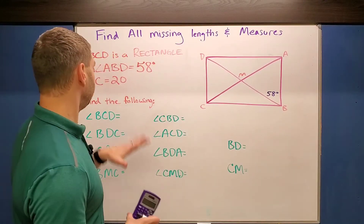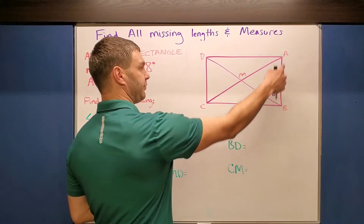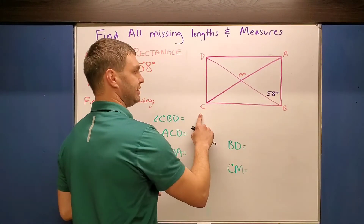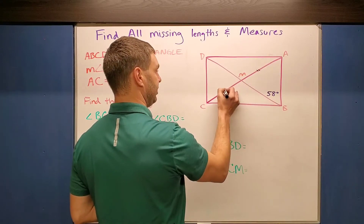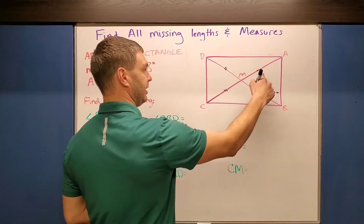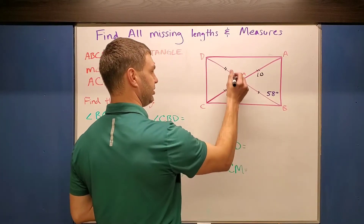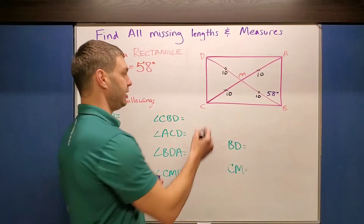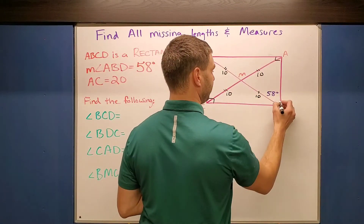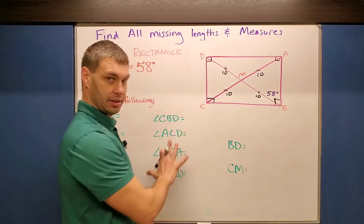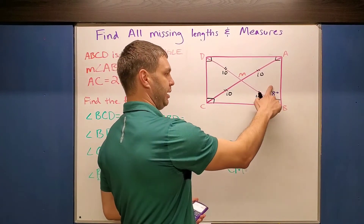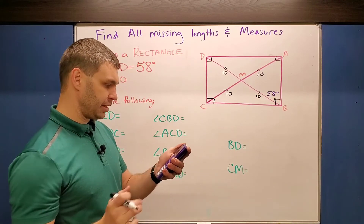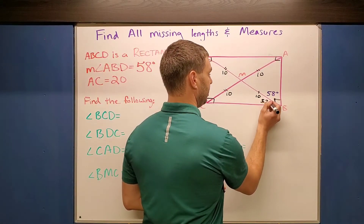The next figure is a rectangle. It says ABD is 58 degrees — ABD is this angle — and it also tells us AC is 20. Similar to the last one, since the diagonals of a rectangle are bisected and all equal, each half is 10 and 10. Another property of a rectangle is that all corner angles are right angles. So right away, before I look at the problems, I know that 90 minus 58 gives me 32 degrees for the complementary angle.